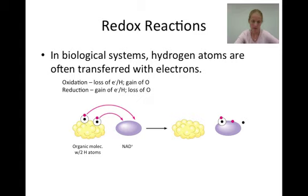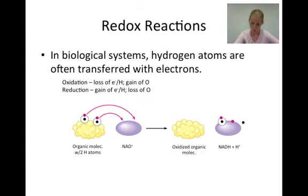Here we see an organic molecule with two hydrogen atoms and a molecule of NAD+, the importance of which will be discussed at another time. In the reaction between the organic molecule and NAD+, the organic molecule loses both hydrogen atoms and is therefore oxidized. Because oxidation and reduction are coupled reactions, the NAD+ must be reduced — it accepts one complete hydrogen atom and the electron from the other hydrogen atom to form NADH. In a biological system, we can evaluate the change from NAD+ to NADH; because the compound gained a hydrogen, it was reduced.